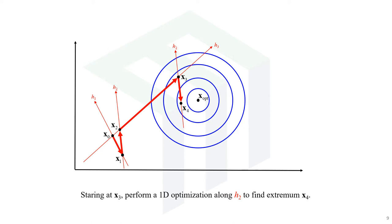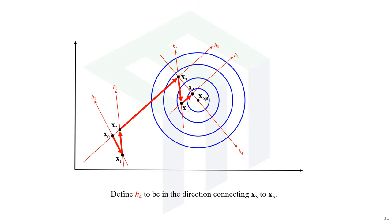We borrow direction h2 and perform a one-dimensional optimization starting at x3, ending up at local extrema x4. We then reuse that conjugate direction h3, perform a one-dimensional optimization starting at x4, and arrive at the next local extrema x5. Now we define a second conjugate direction h4 in the direction connecting x3 to x5.